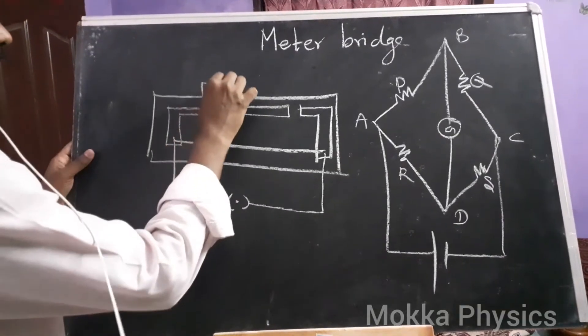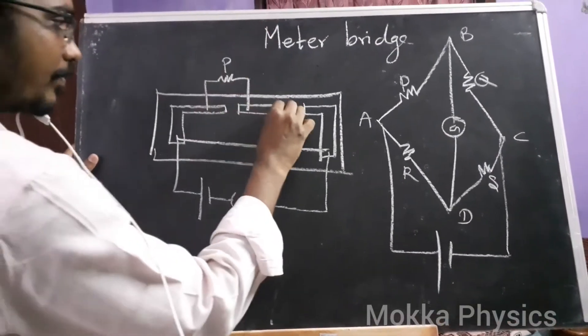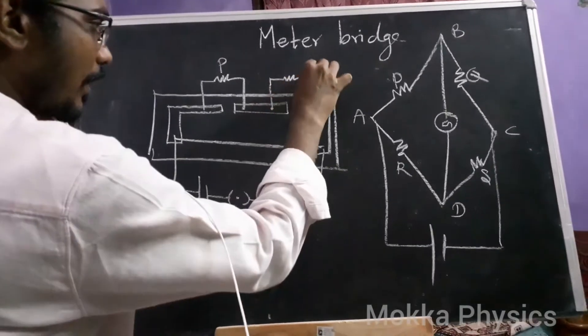In this gap, there is an unknown resistance P. Now let's connect an unknown resistance Q.